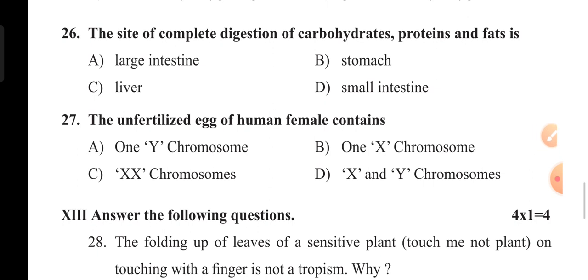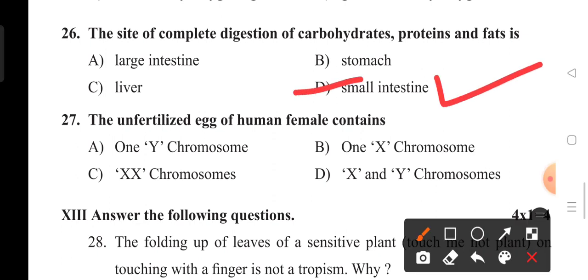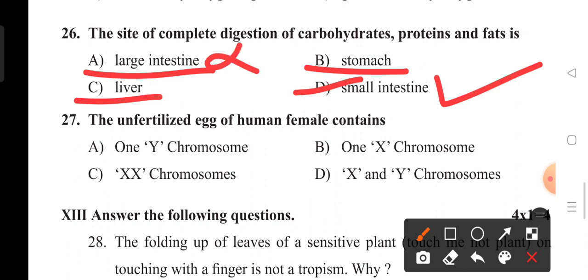The site of complete digestion of carbohydrates, proteins, and fats: digestion starts in the stomach, but complete digestion occurs in the small intestine. The small finger-like structures called villi present in the small intestine absorb simple forms of carbohydrates, proteins, and fats. The large intestine handles absorption of minerals, water, and storage of waste. Liver releases some enzymes but does not complete digestion. Our answer is small intestine, option D.